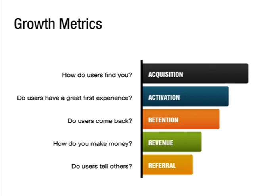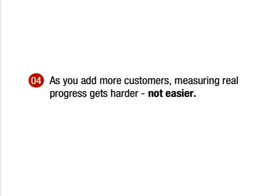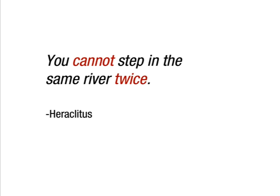Once we demonstrate our basic value metrics, the focus then shifts towards growth. On the customer lifecycle, sustainable growth can come from one of these three key engines of growth. The learning now shifts to being more quantitative. But as you add more customers, measuring progress actually becomes harder, not easier. This is because the product is constantly changing — we are continually adding more customers, more features, and running more marketing campaigns, which makes it harder to correlate cause from effect.